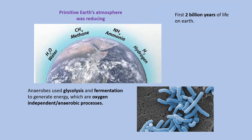Let us start with conditions on the primitive earth. We all know that primitive earth's atmosphere was reducing. It had gases like methane, ammonia, hydrogen and water vapor, and there was no oxygen present. So for the first 2 billion years of life on earth, anaerobes only existed, which used glycolysis and fermentation to generate energy, and both of these are oxygen independent processes.